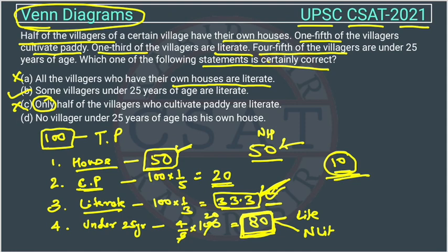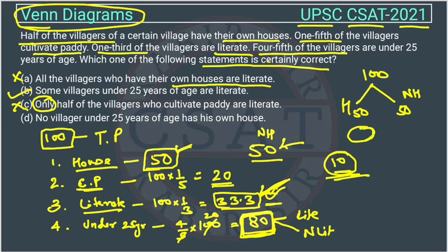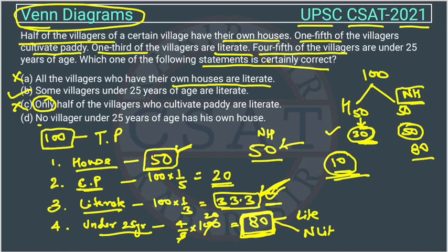Option D says no villagers under 25 years of age has their own house. There are 80 people under 25 and 100 total. These 80 will be distributed, but we don't know in which ratio. However, only 50 people do not own a house, so all 80 under-25 villagers cannot be in the non-house category — at least 30 of them must own a house. This statement is also wrong. So only statement B is correct, and the answer is option B.